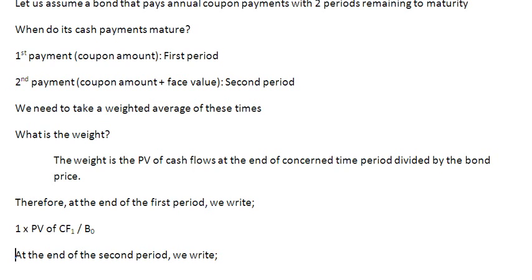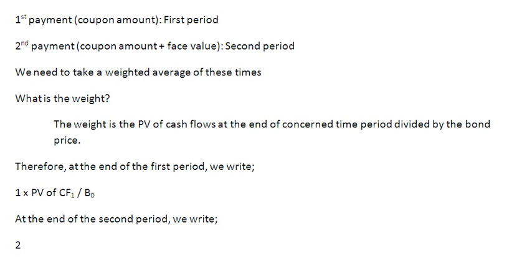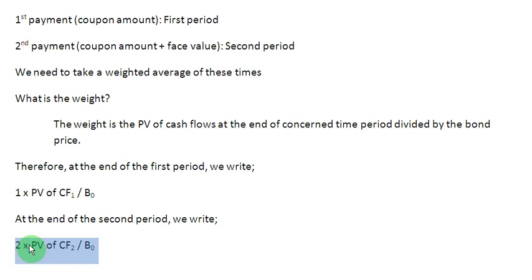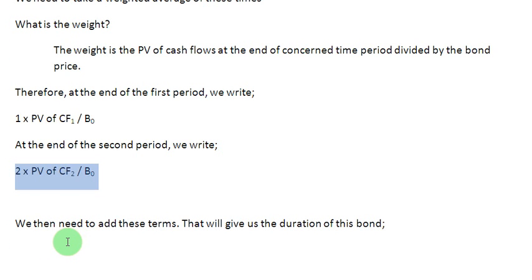Similarly, at the end of the second time period I write 2 for the second time period, multiply this by the present value of the cash flow occurring at the end of the second time period, and divide this by the price of the bond B0. Then there is only one more step left, which is to take the sum of both these terms, and once we have added these terms we are going to get the duration of the bond.